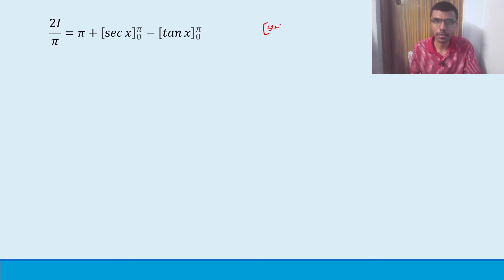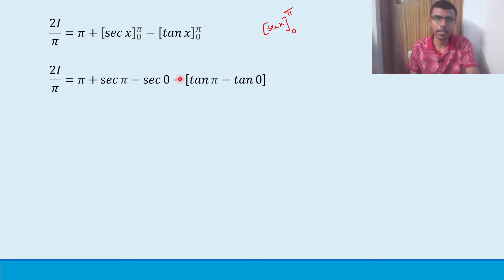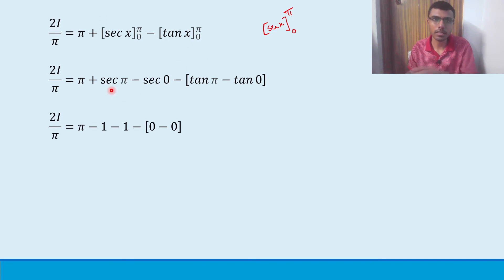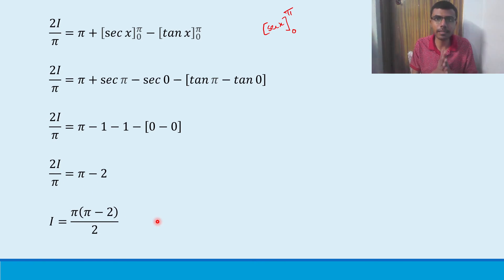Substituting limits: sec(π) = -1, sec(0) = 1, tan(π) = 0, tan(0) = 0. So 2I/π = π + (−1 − 1) − (0 − 0) = π + (−2) = π − 2. Therefore 2I = π(π − 2), which gives I = π(π − 2)/2. That's the final answer.